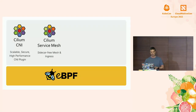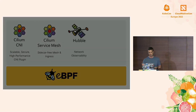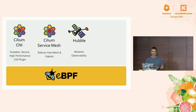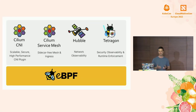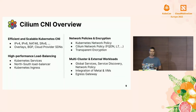Cilium is also a service mesh. It can provide a sidecar-free service mesh and ingress. We have network observability with project Hubble, which provides OpenTelemetry, Prometheus metrics. And recently announced, Tetragon provides security observability and runtime enforcement. Let's look into all of them a little bit.